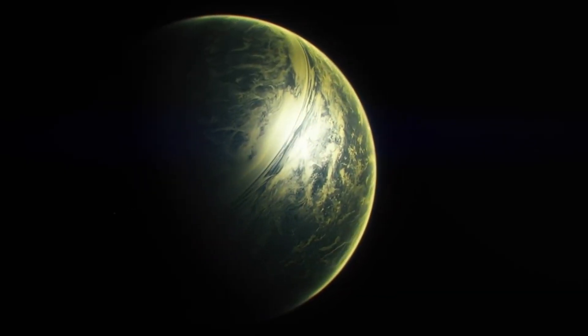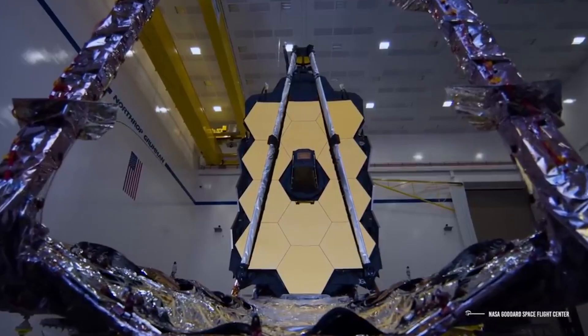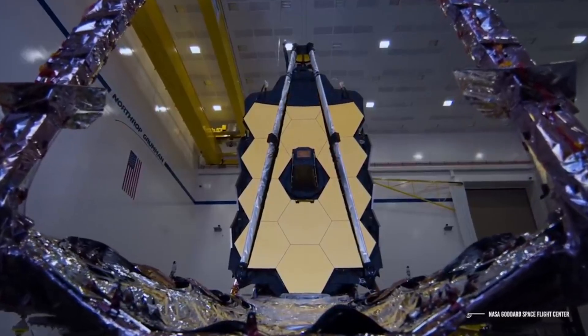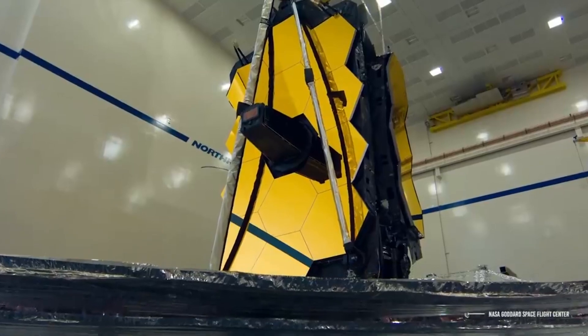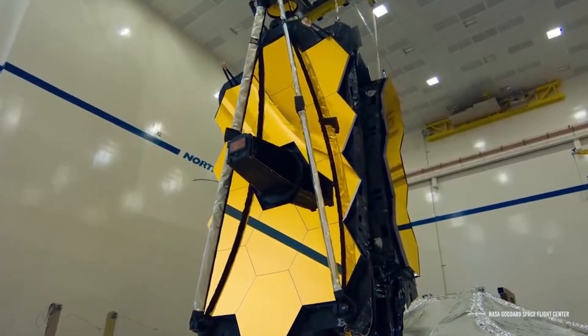Before going into operation, however, the 18 hexagonal segments of the telescope's gold-coated 21-foot diameter primary mirror must be precisely aligned with one another.